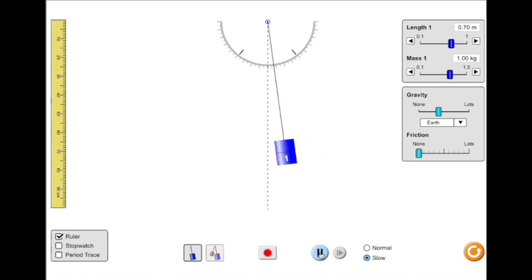Select the stopwatch on the bottom left side of the screen to measure the period of the pendulum.